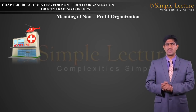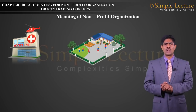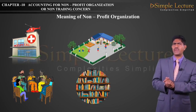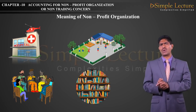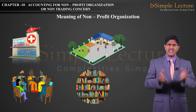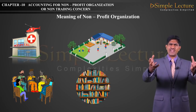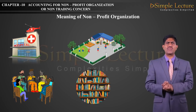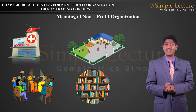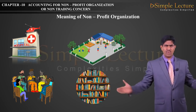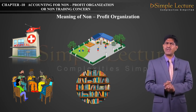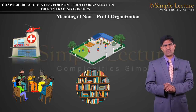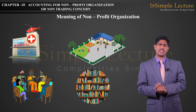Examples of Non-Profit Organizations include hospitals, schools, clubs, and libraries. It is very important to understand the meaning of Non-Trading Organization in simple language: any voluntary organization started with the intention of service, not for a profit motive. Examples already mentioned include educational institutions, public hospitals, public libraries, etc.